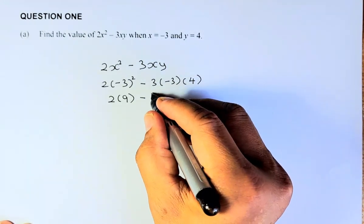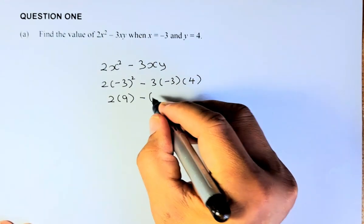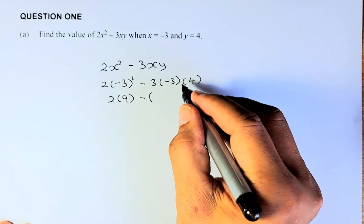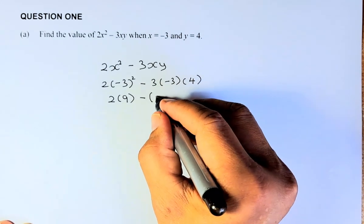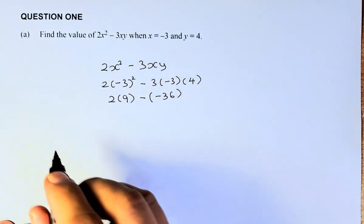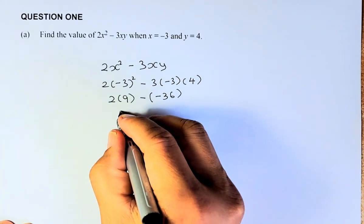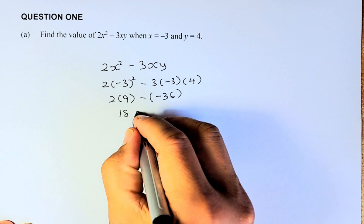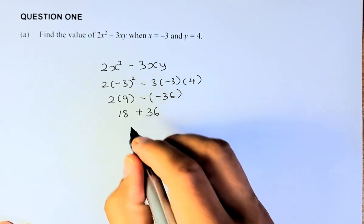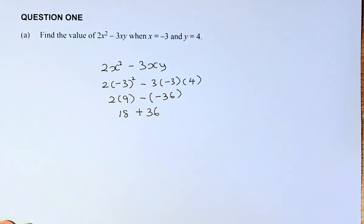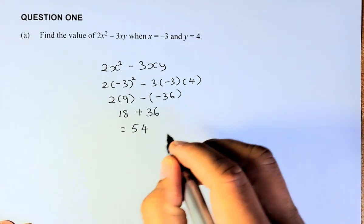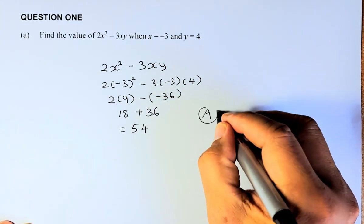And then on that side, put a bracket first: 3 multiplied by negative 3 is negative 9. Negative 9 times 4 is negative 36, so put negative 36 there. Now you expand it: 2 times 9 is going to be 18. Minus, and minus becomes plus 36. So 18 plus 36, the answer is going to be 54. And that will give you an Achieved in that question.